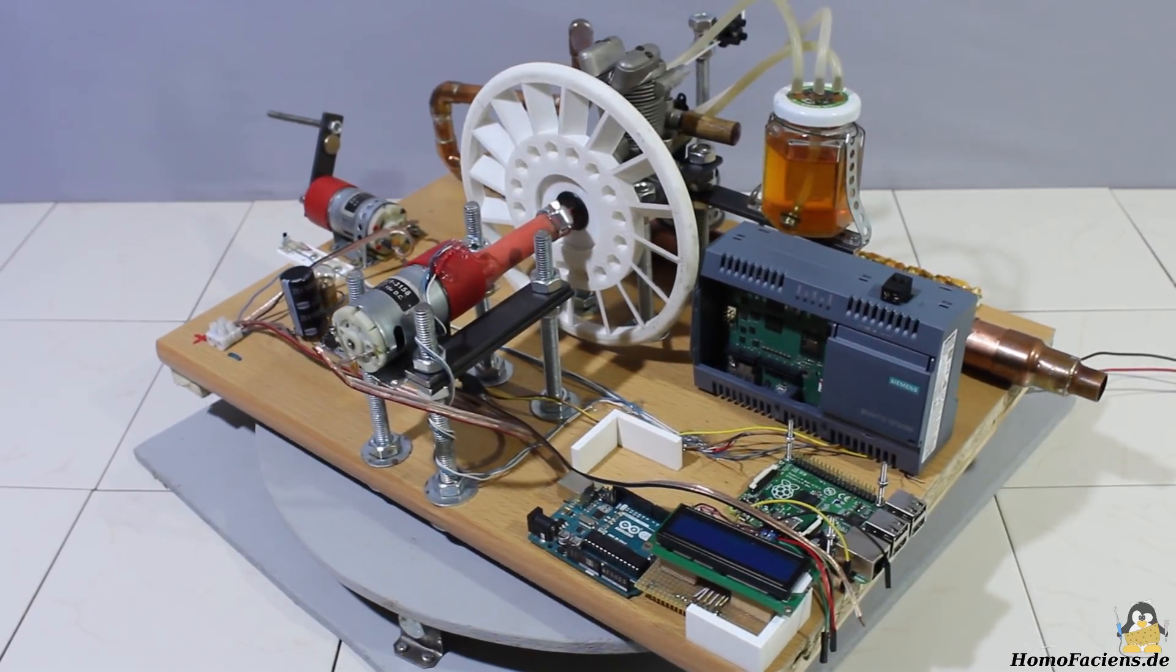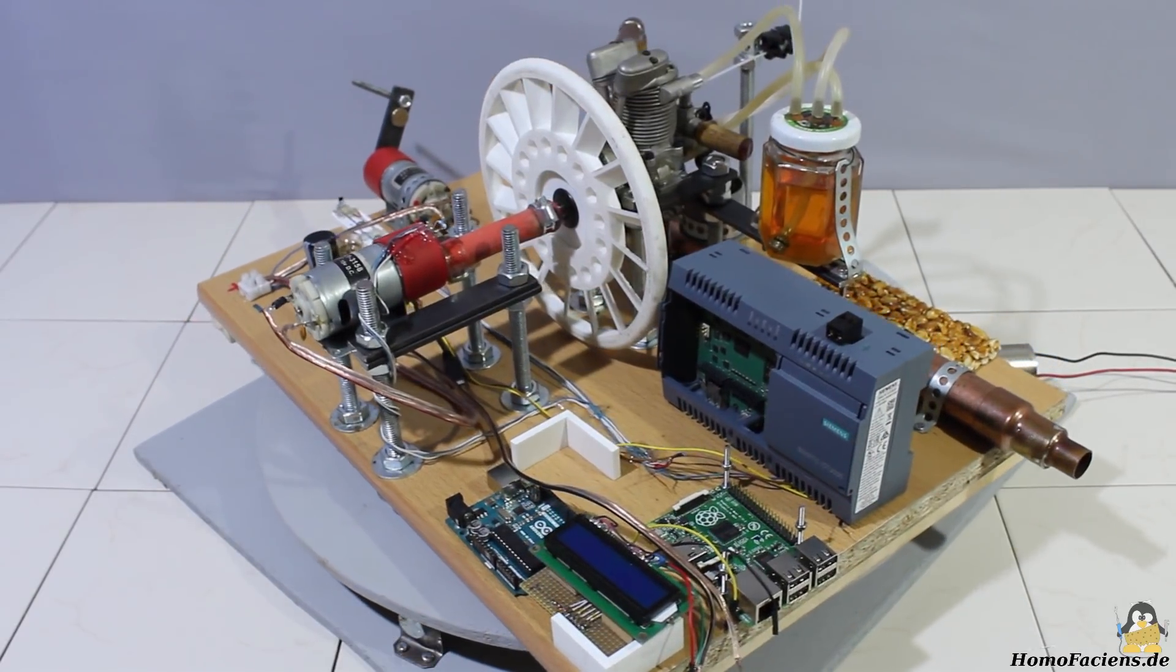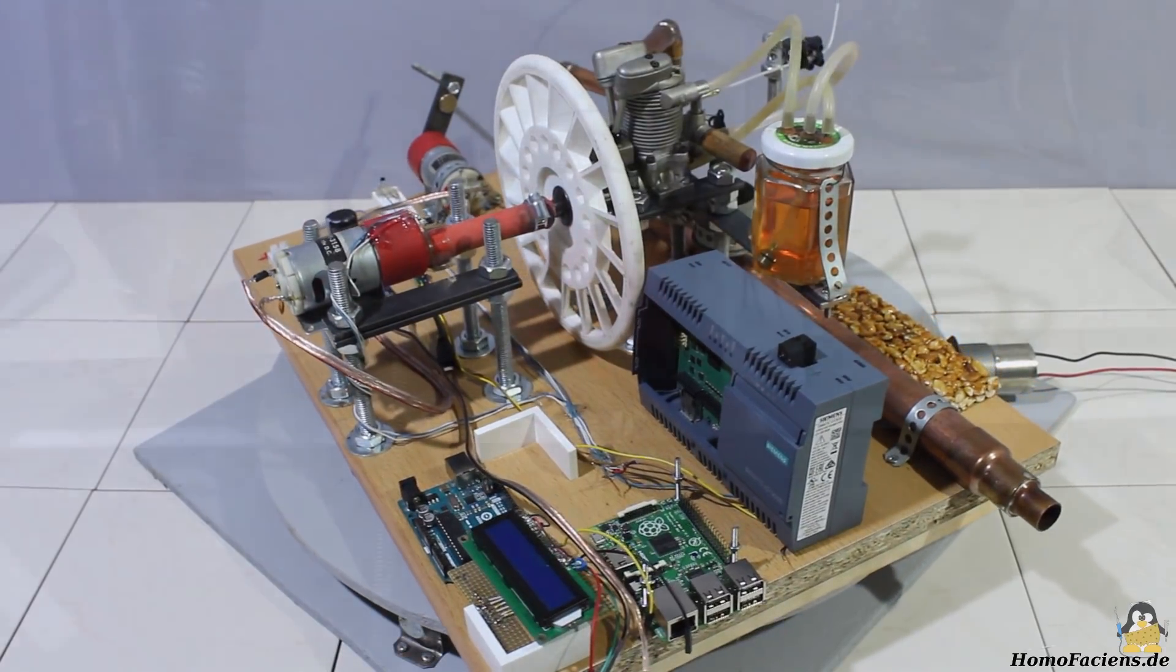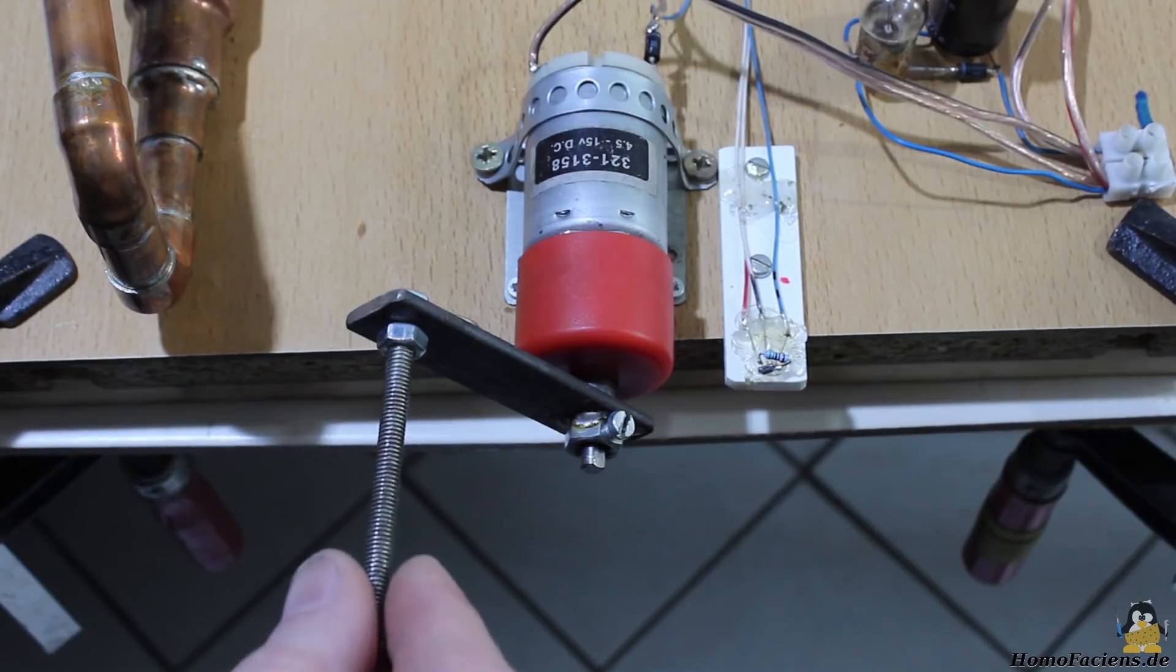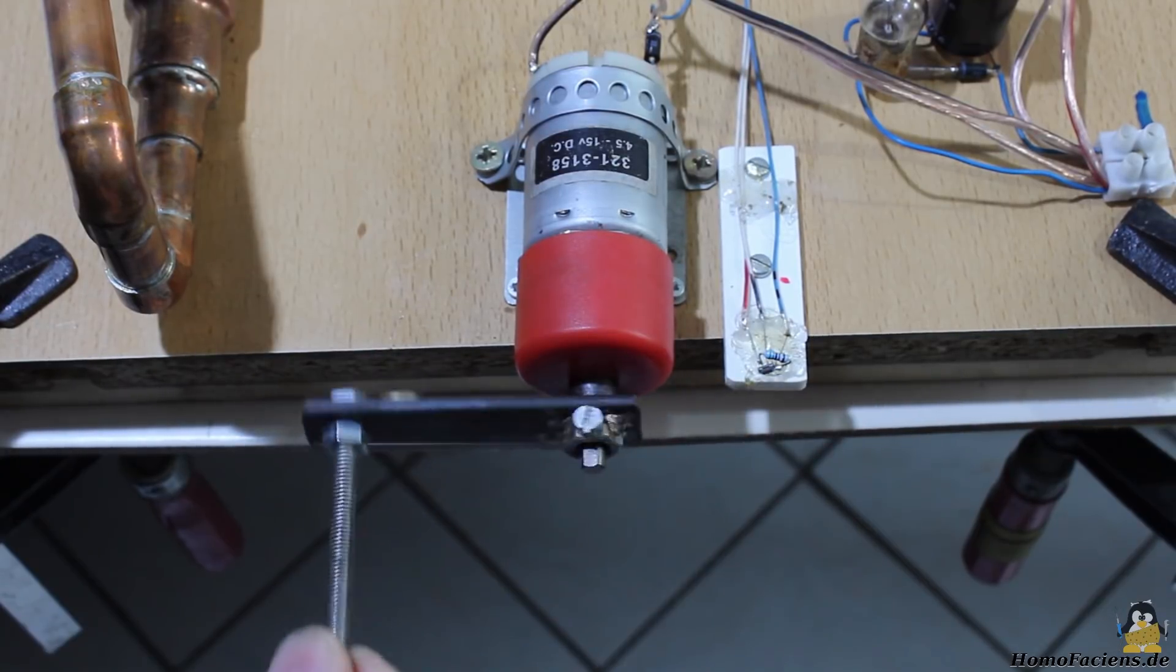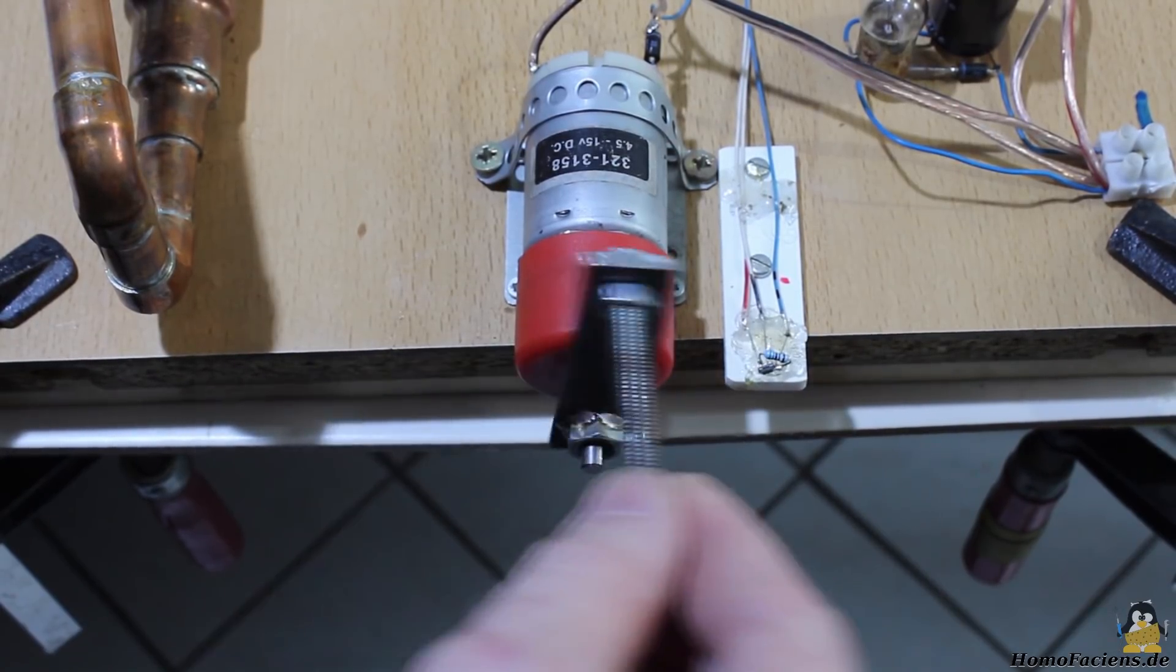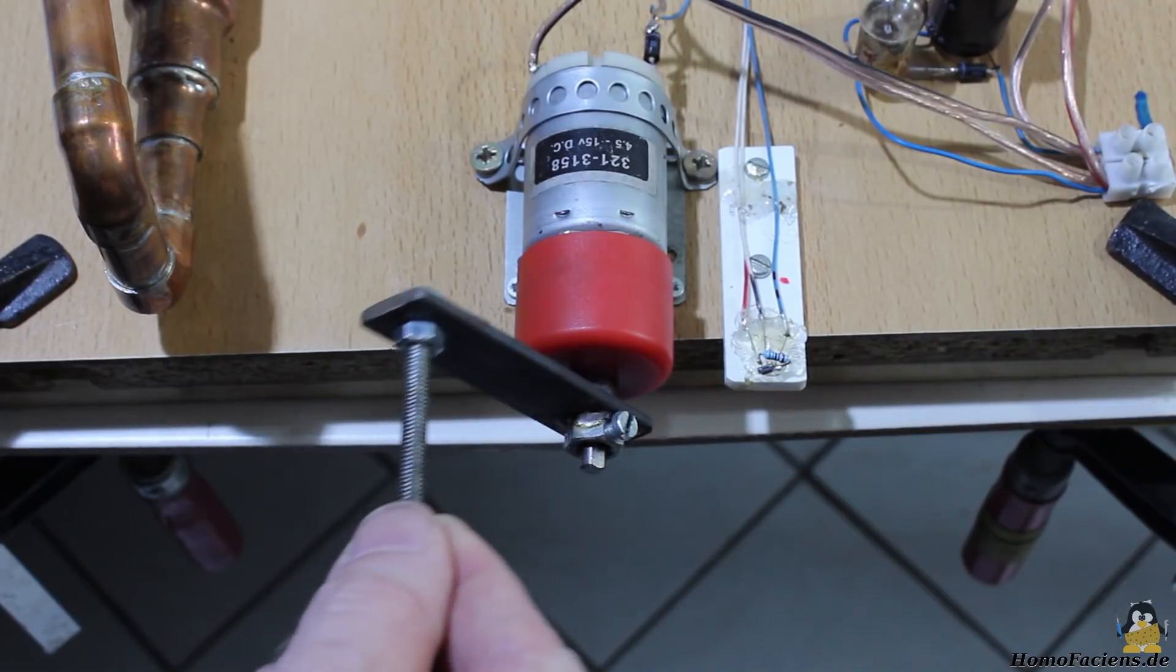Two geared DC motors are on my board with the test setup. The first one being driven by a hand crank has a transmission of 1 to 50, so that one revolution of the crank results in 50 revolutions of the motor.